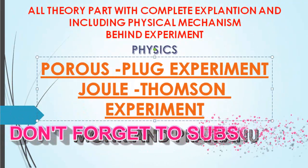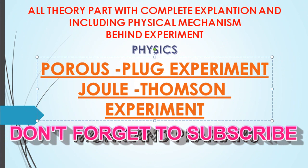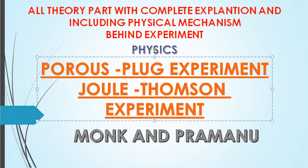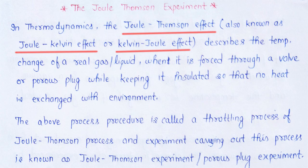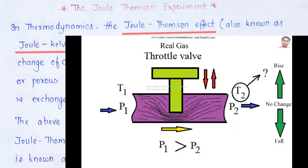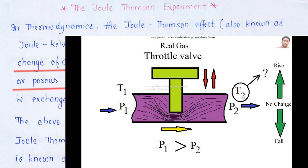Welcome to Mohk and Pramanu in the physics session. Today in the thermodynamics series we will discuss the Joule-Thompson experiment or porous plug experiment. James Prescott Joule, William Thompson, and Baron Kelvin तीनों ने मिलकर किसी real gas या liquid को forcefully एक valve जिसकी opening बहुत small थी के अंदर से पास कराया था, तथा उस समय experiment के अंदर जो temperature change आया था उसे note किया था।